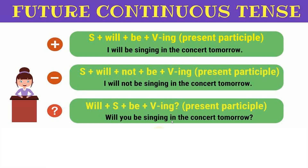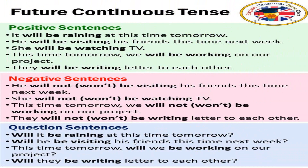Let's see examples of future continuous tense transformations. Positive: 'It will be raining at this time tomorrow.' Negative: 'It will not be raining at this time tomorrow.' Interrogative: 'Will it be raining at this time tomorrow?' Next, positive: 'He will be visiting his friends this time next week.' Negative: 'He will not be visiting his friends this time next week.' Interrogative: 'Will he be visiting his friends this time next week?' Next: 'She will be watching TV.' Negative: 'She will not be watching TV.' Interrogative: 'Will she be watching TV?'